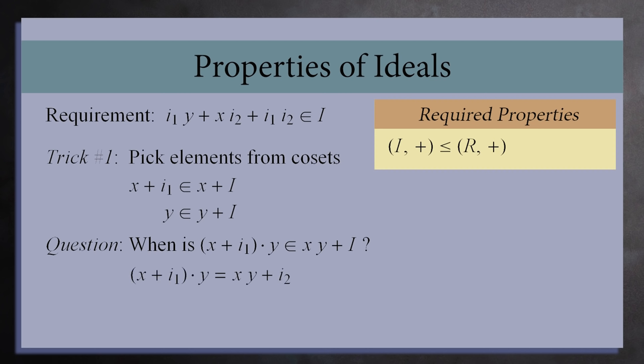So if we multiply the elements on the left, we should get xy + I₂ for some I₂ in the set I. Multiplying out and cancelling the xy terms shows that I₁ times y equals I₂.